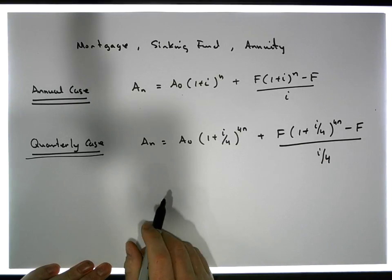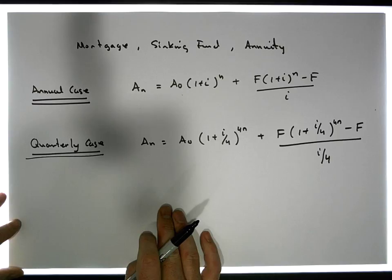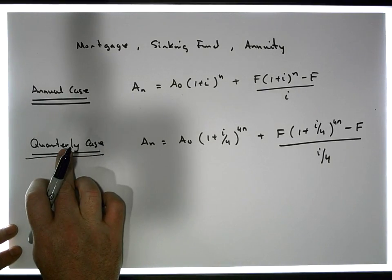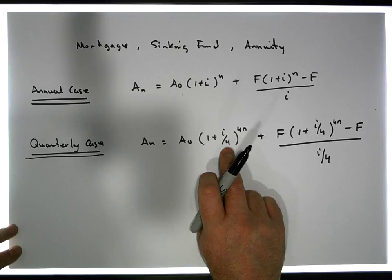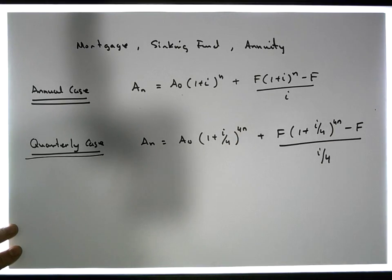It's the same logical argument. And if it is, if compounding happens in more situations than quarterly, well, then the term here just changes. If it's monthly, this becomes a 12, and so on and so forth. So let's just keep that in mind,